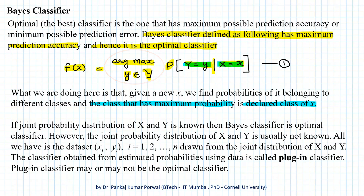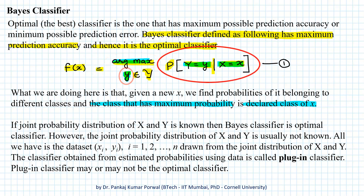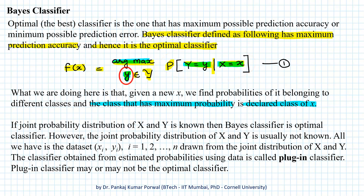This way our prediction has maximum probability of being correct and here we are finding argmax. What argmax means is the value of argument y at which our function is maximum. So we are not really interested in the maximum value of the function, but we are interested in the position of y where the maximum occurs.